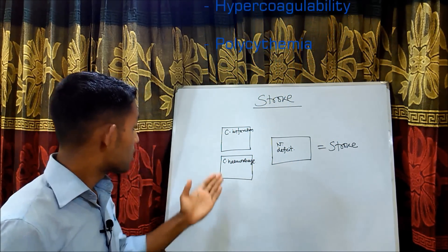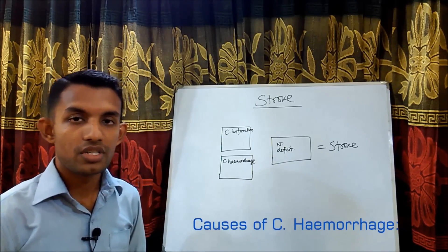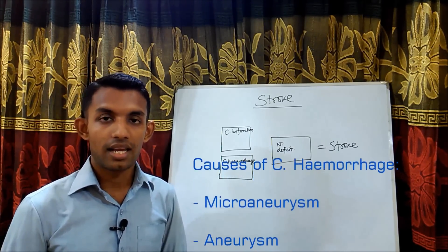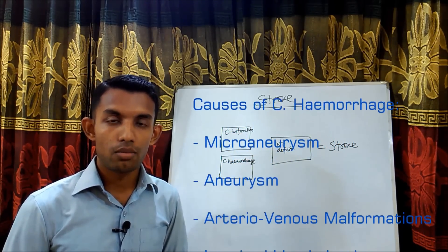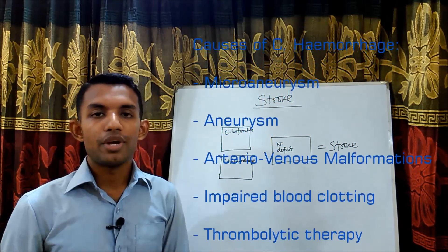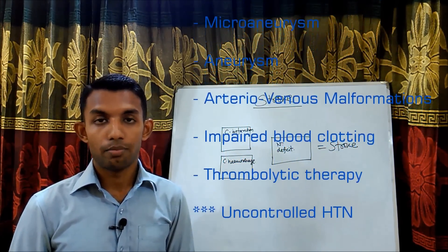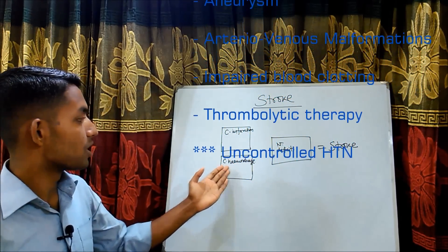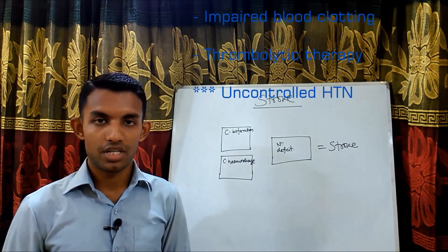What are the causes of cerebral hemorrhage? The causes of cerebral hemorrhage are complex small vessel disease like micro-aneurysm, aneurysm, arteriovenous malformation, impaired blood clotting, and thrombolytic therapy. But the most important cause of cerebral hemorrhage is uncontrolled hypertension.